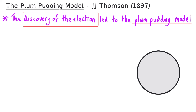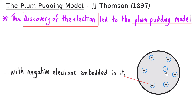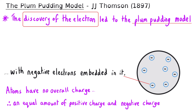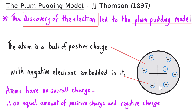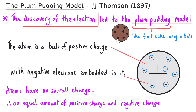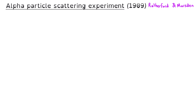According to this model, atoms were not solid spheres as had been previously thought, but in fact they had negative electrons embedded in them. And since scientists knew through their experiments that atoms had no overall charge, they knew that there must be an equal amount of positive charge and negative charge. And so the atom was thought to be a ball of positive charge with the negative electrons embedded within it. It was called the plum pudding model because the negative electrons were like the plums in a pudding, and the rest of the atom was a sphere of positive cake which made up the mass of the atom.